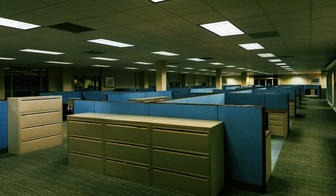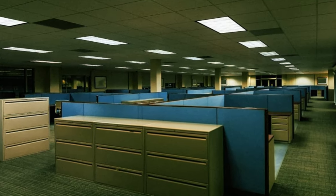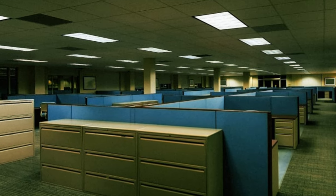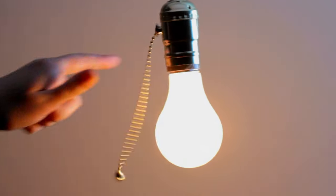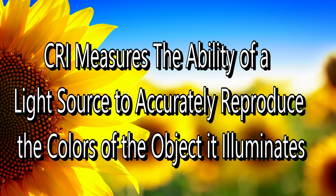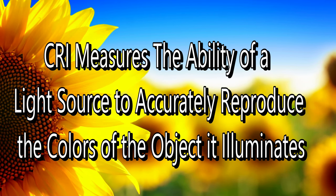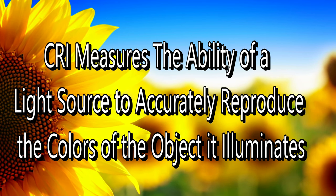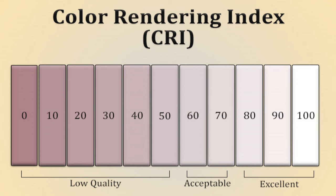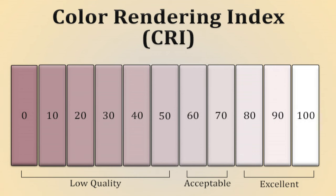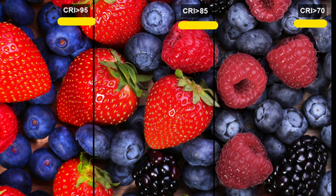Imagine walking into a room like this one. The lighting is dim and the colors are faded — that's because the light bulbs used here have a low CRI rating. CRI measures how accurately a light source reveals the true colors of objects compared to natural sunlight. CRI is measured on a scale from 0 to 100. A higher CRI means better color accuracy, while a lower CRI means colors may appear distorted or washed out.